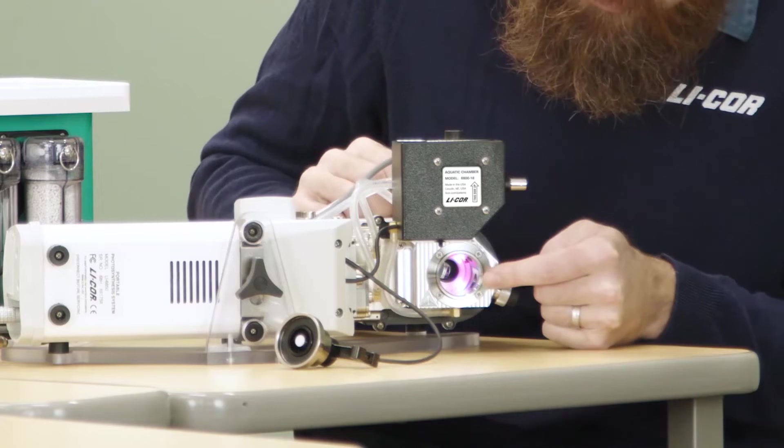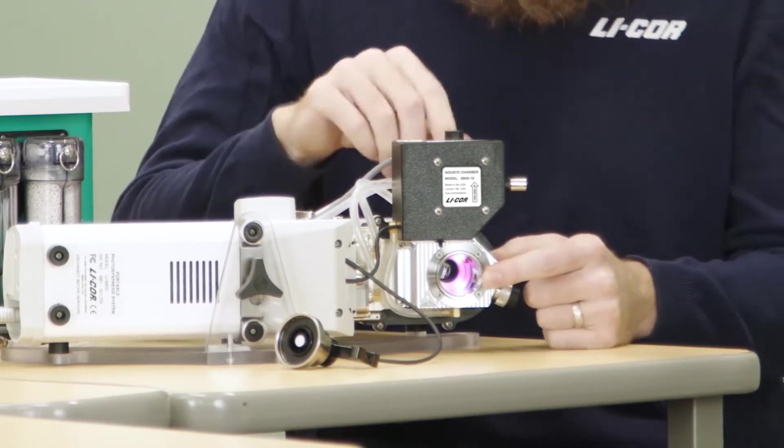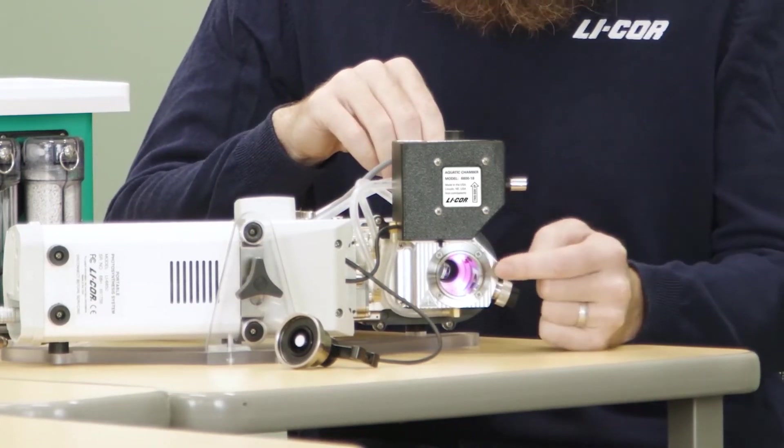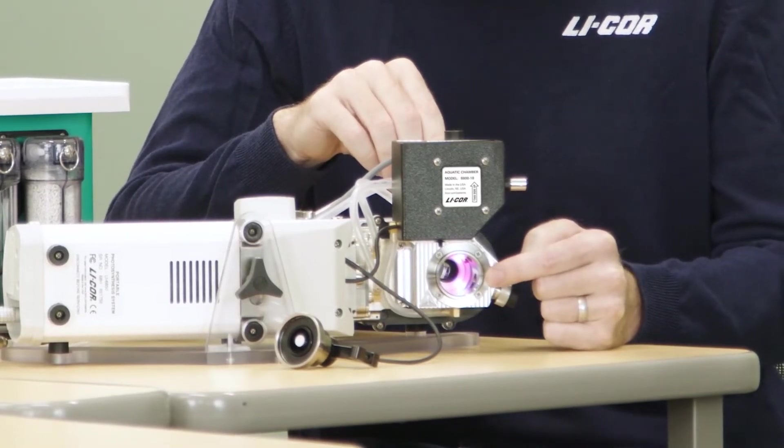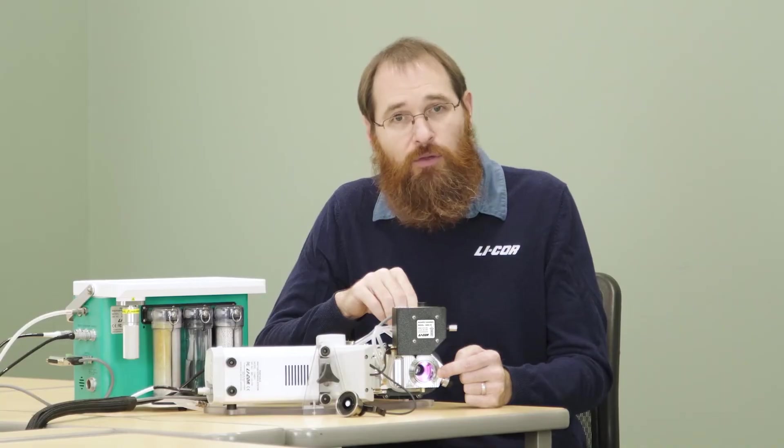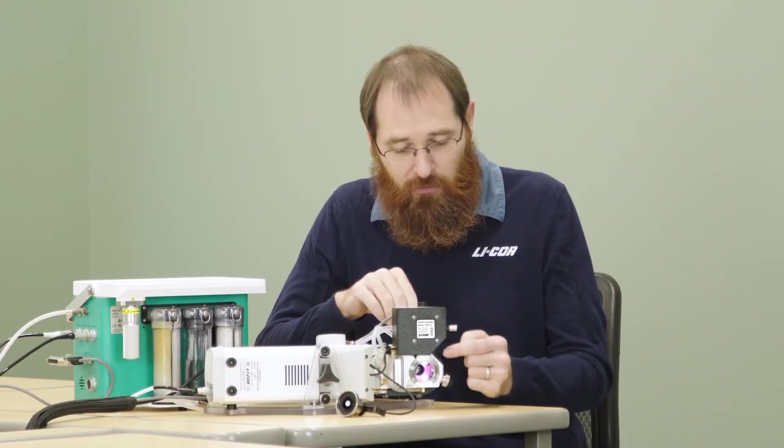We have a liquid sample that sits here. In the bottom of this sample holder there are some tiny precision machined holes that we send a very precisely controlled air flow through. That gives us very uniform and controlled bubbling through the sample.